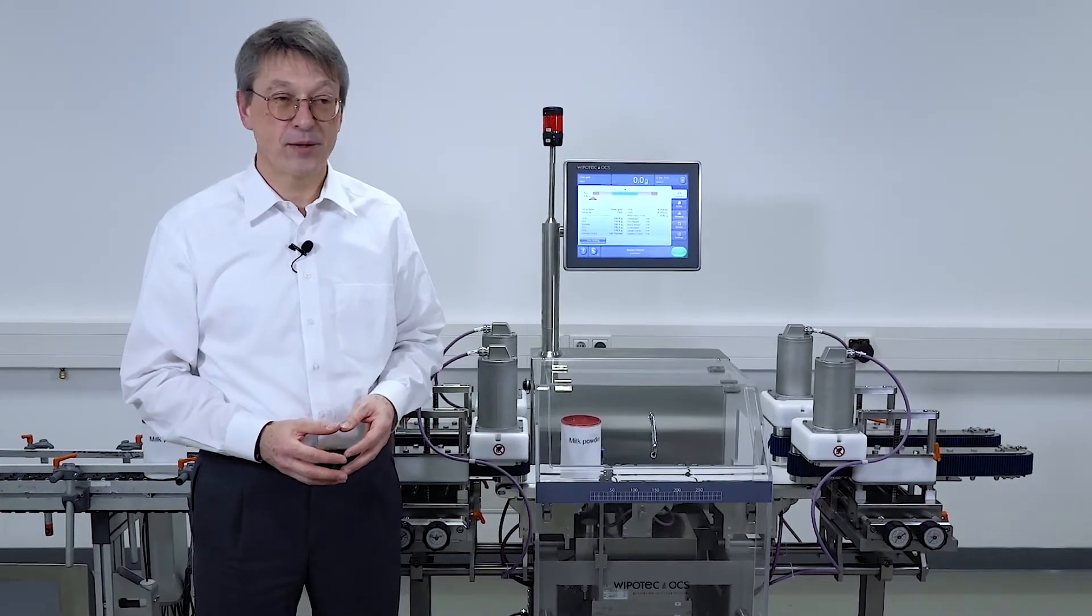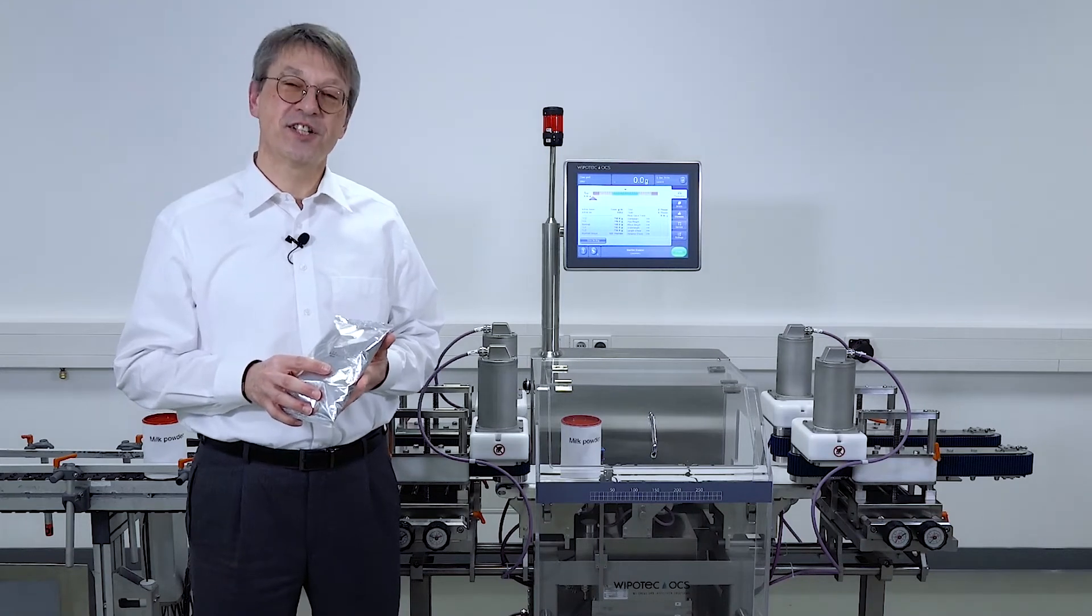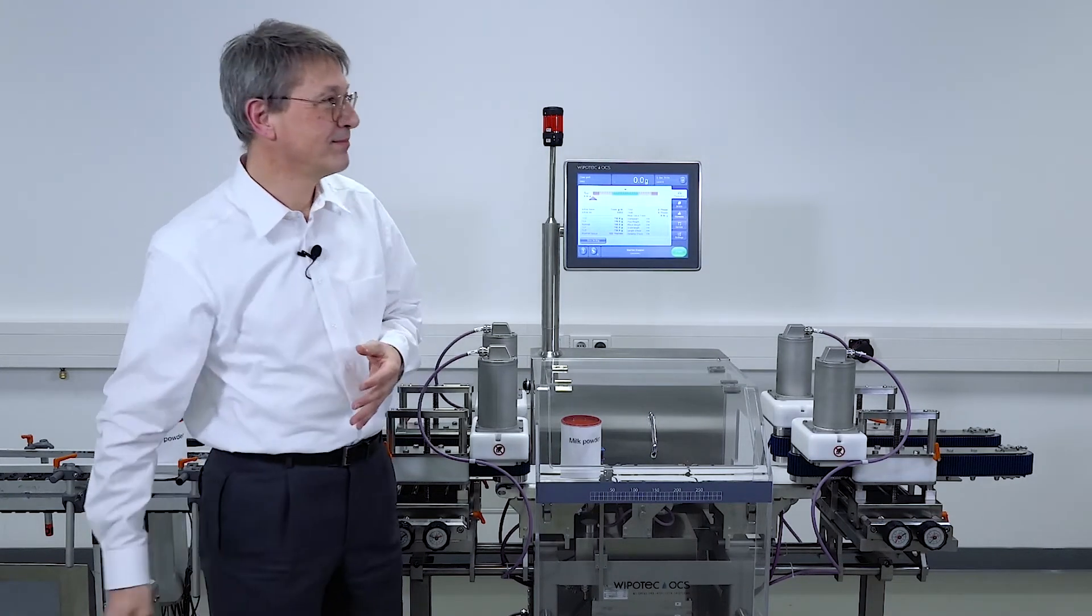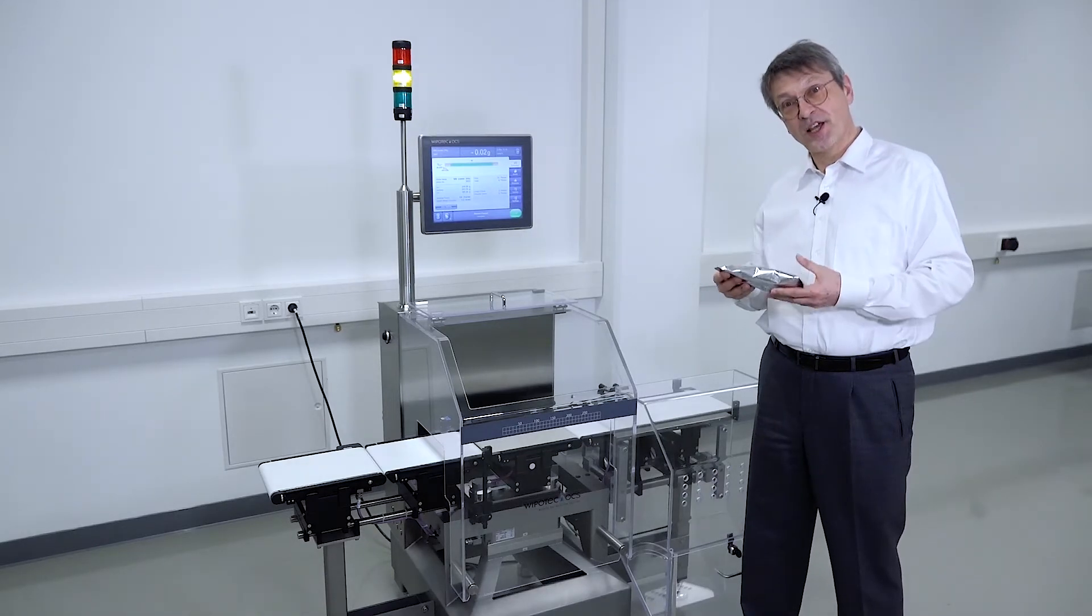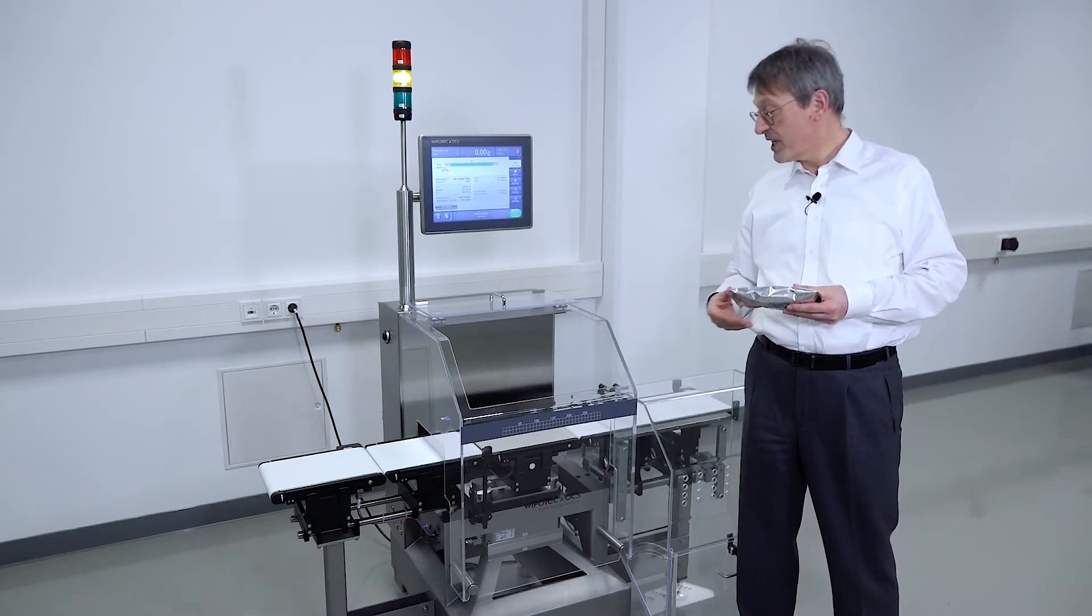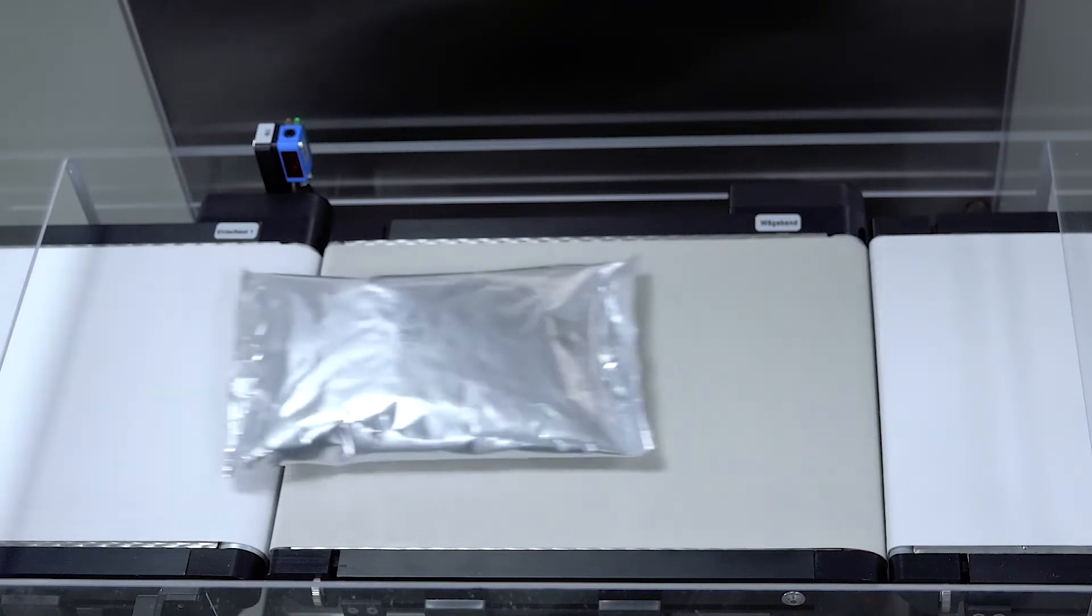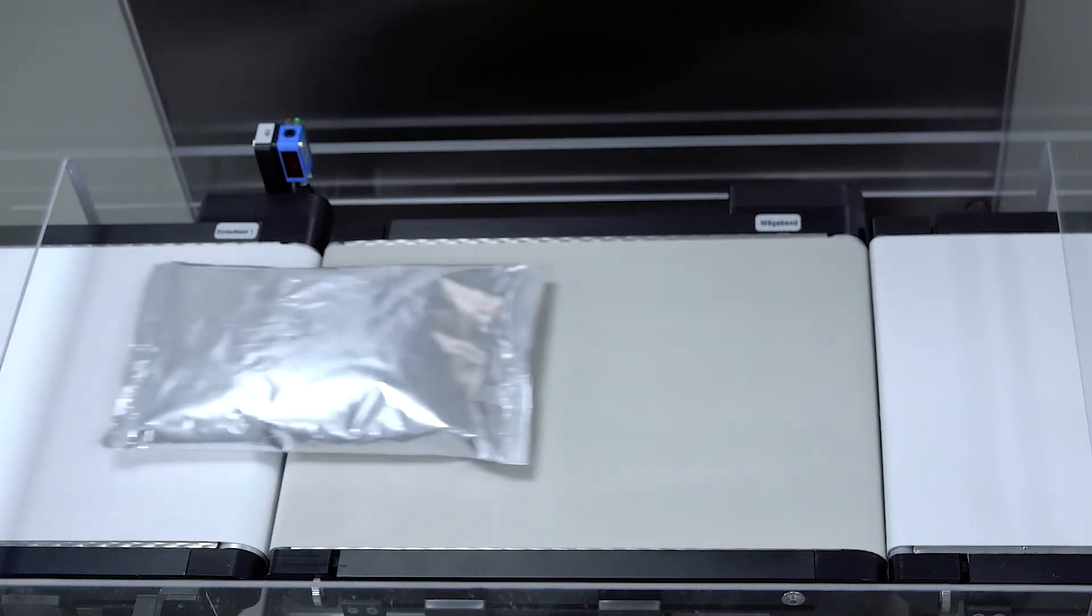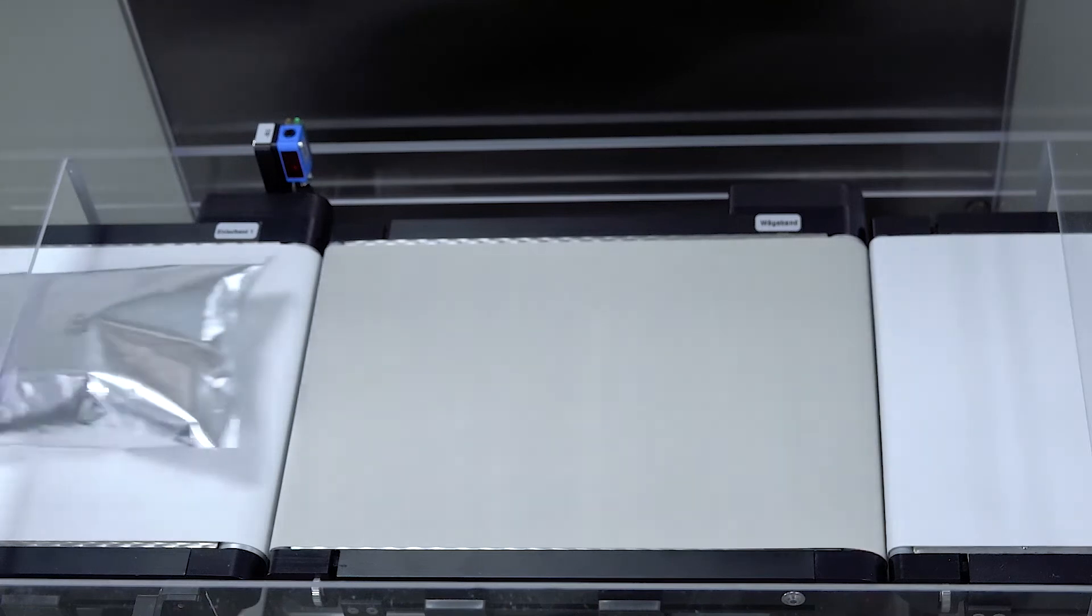When you're filling milk powder in pouches like that you would need a checkweigher with a different setup. We may have pouches which do not come with the required product distance. For those cases we're using two infeed conveyors. The first one is accelerating the product to the gap which we need in order to have one length of the weighing conveyor in between two products.